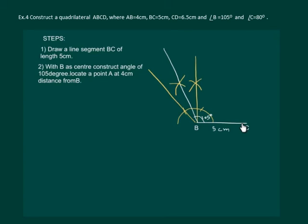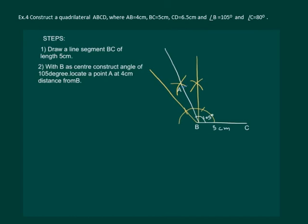Now we have to locate point A on this line at a distance of 4 centimeters. We will open our compass to 4 centimeters radius, mark an arc, and name it A.